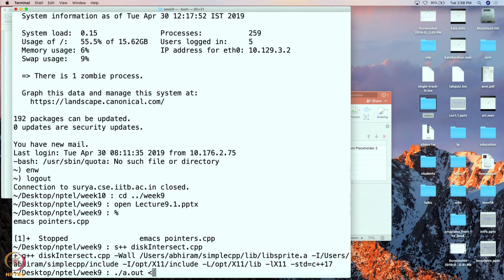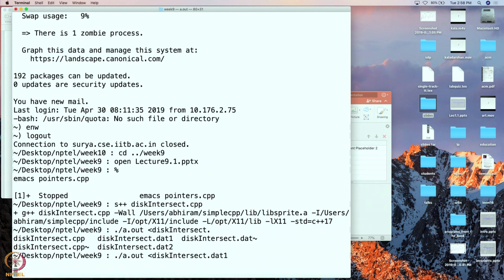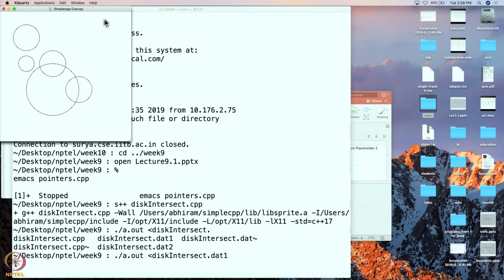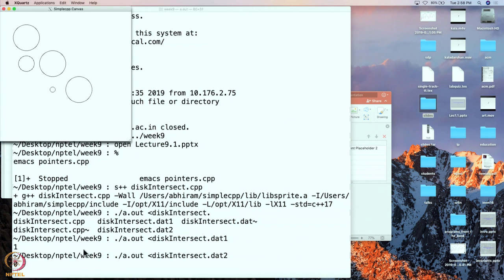Let me compile this, and we're going to run it by redirecting the file. .dat1 is one file. The answer is 1, and here is the plot. Here are the circles. Clearly there is intersection, and therefore the answer was 1. Let us do one more. We do it for .dat2, and this time there is no intersection, and in fact the answer is 0.